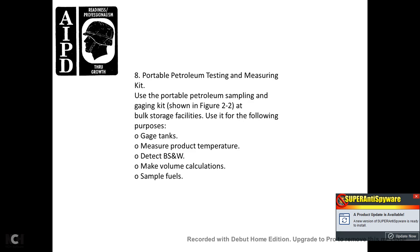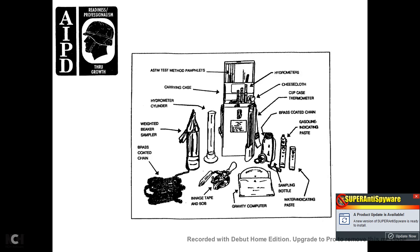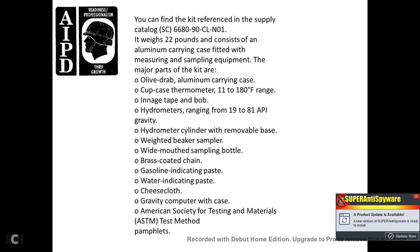8. Portable petroleum testing and measuring kit. The petroleum portable sampling and gauging kit, shown in Figure 2-2, is used at bulk storage facilities for the following purposes: gauge tanks, measure product temperature, detect bottom sediment and water, make volume correction calculations, and sample fuels. The kit includes: ASTM method pamphlets with a carrying case, hydrometer cylinder, weighted beaker sampler, brass-coated chain, ingage tape and bob, gravity computer, water indicating paste, sample bottles, gasoline indicating paste, brass-coated chain, cup case thermometer, cheesecloth, and a hydrometer.